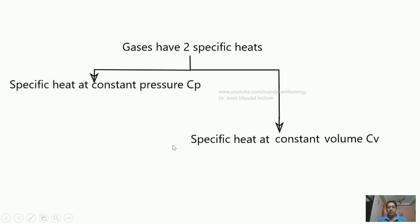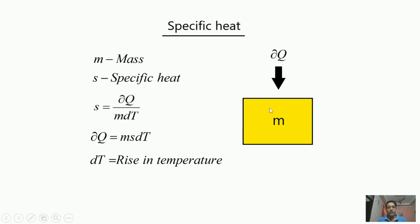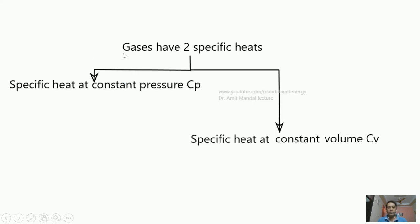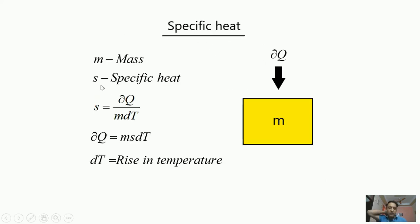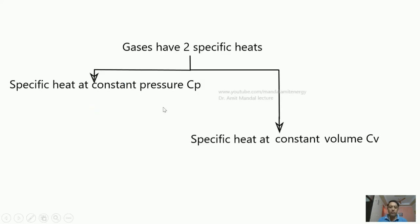Now, for gases there are 2 specific heats. This unique specific heat definition is applicable for all kinds of substances such as liquids and solids, but in the case of gases there are 2 specific heats. One is specific heat at constant pressure and the other is specific heat at constant volume. So 1 kg of gas has Cp — specific heat at constant pressure — and Cv — specific heat at constant volume.